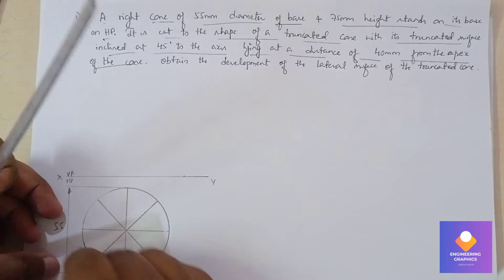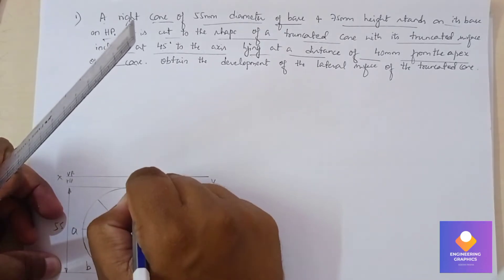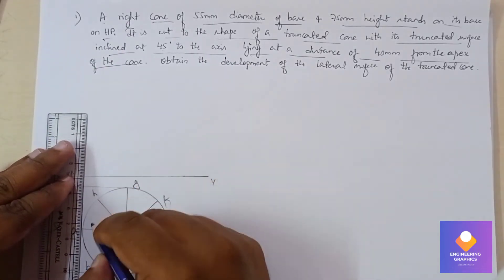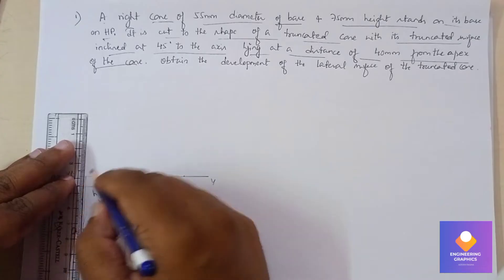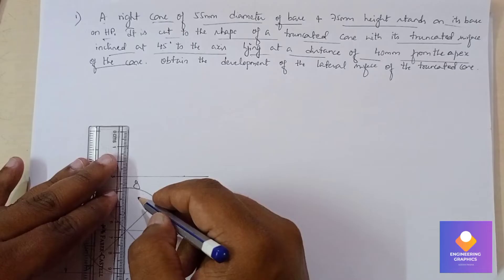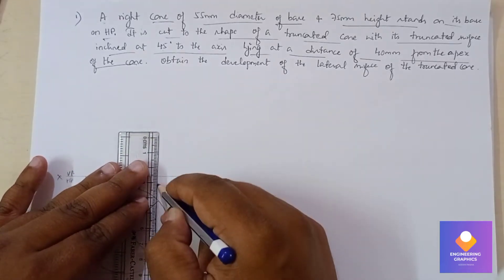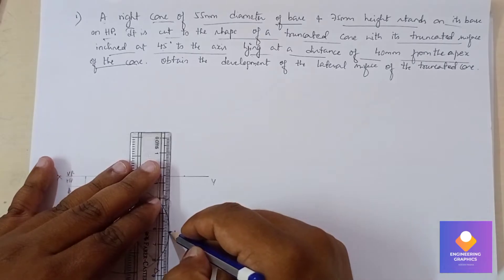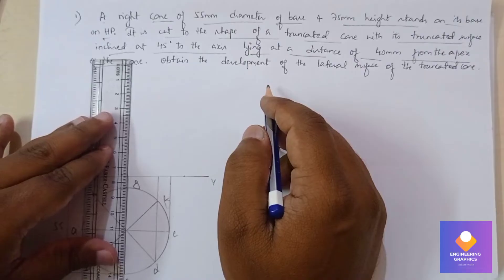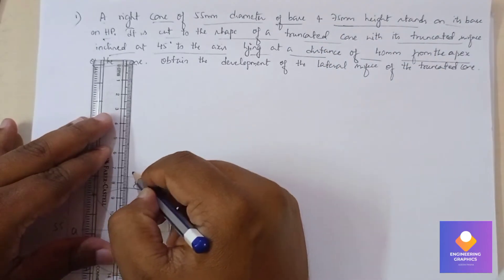Mention the naming: a, b, c, d, e, f, g, h. Now project the lines onto the XY line. Draw an axis for a height of 75 mm.